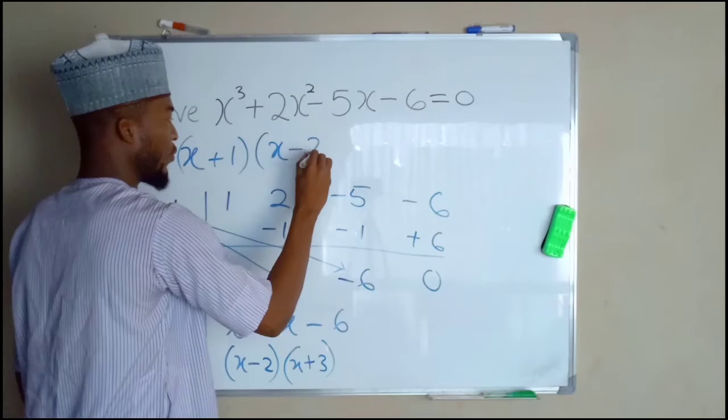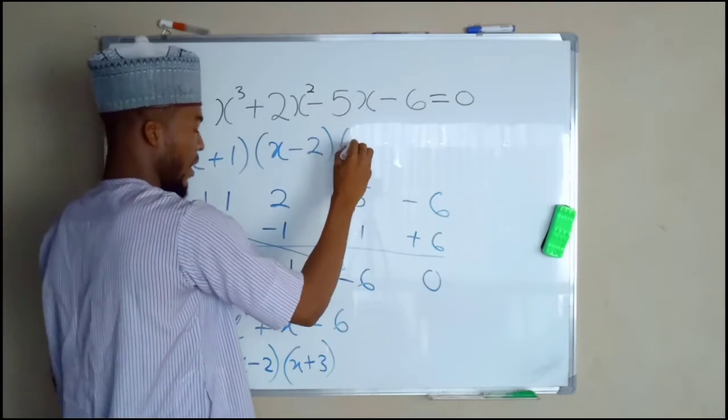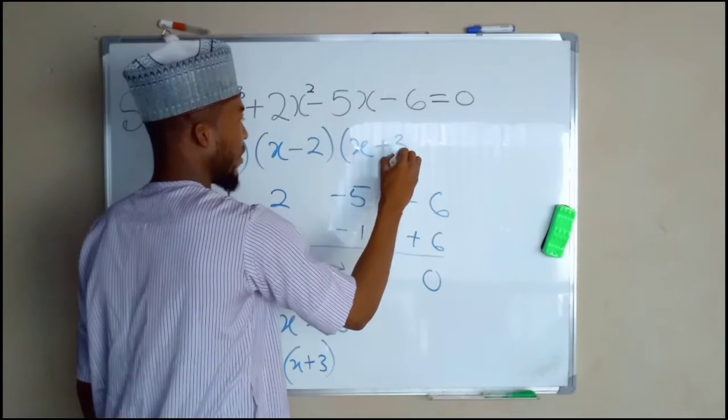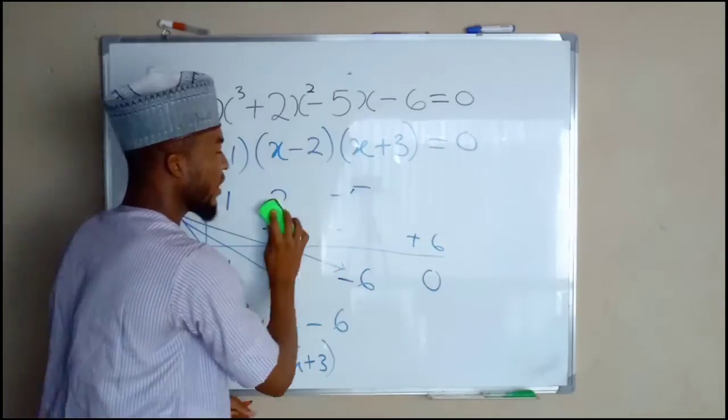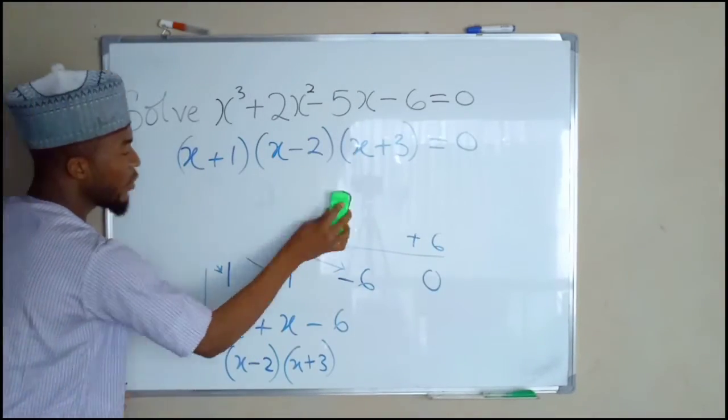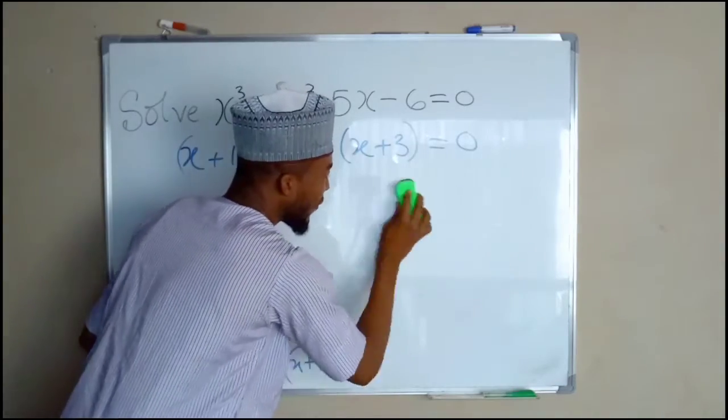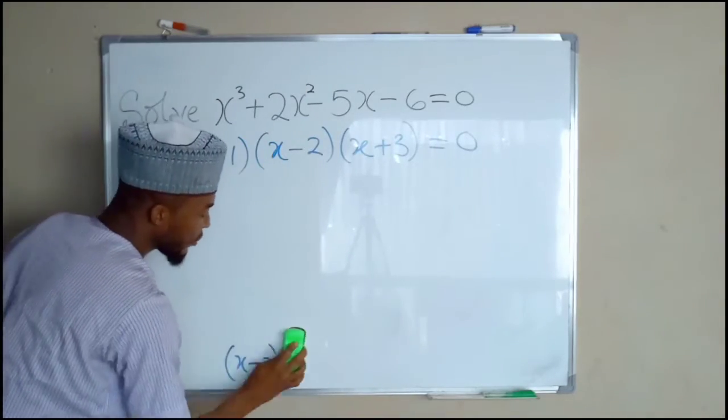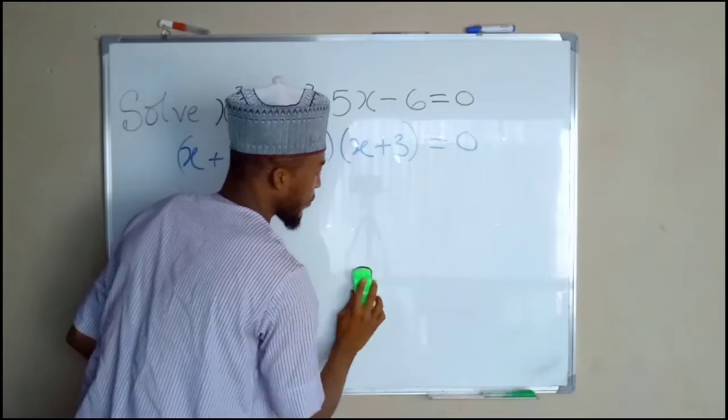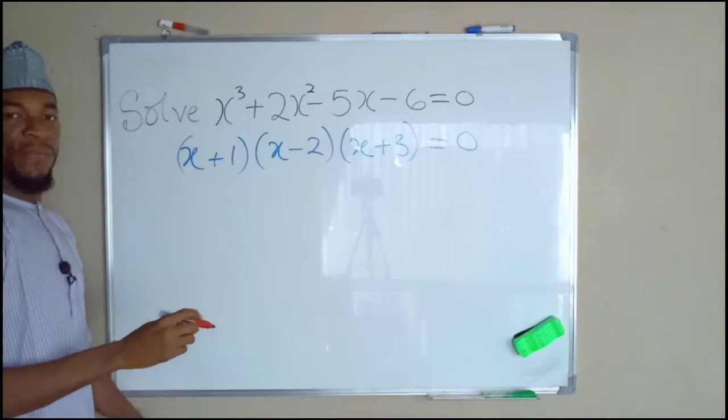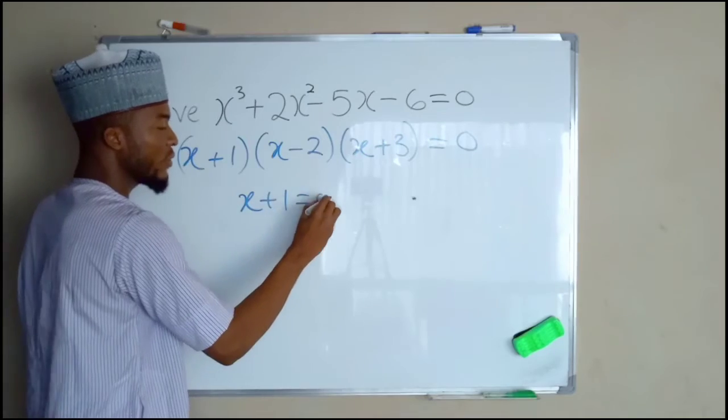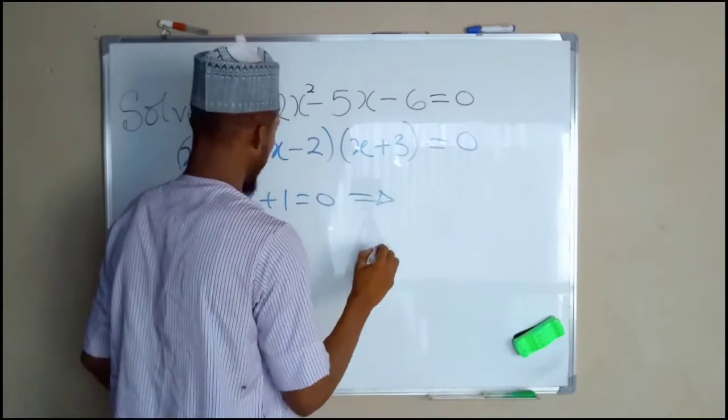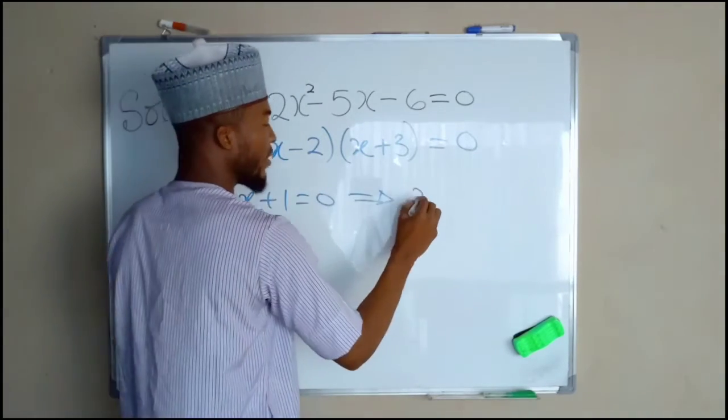x minus 2 and x plus 3. So now we are going to set each one of these factors to be equal to 0 in order to find the real values of this cubic equation. If you set the first factor to be equal to 0, x plus 1 equals to 0, this implies that x is equal to negative 1.